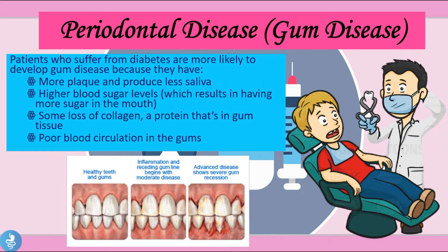Another complication is periodontal disease — gum disease. Patients with diabetes are more likely to develop gum disease because they have more plaque, produce less saliva, have higher blood sugar levels resulting in more sugar in the mouth, some loss of collagen in the gum tissue, and poor circulation in the gums. Over time as the diabetes worsens, so does the gum disease.